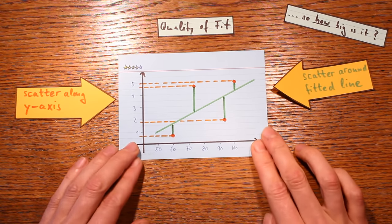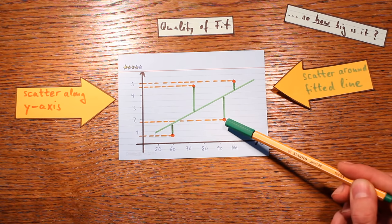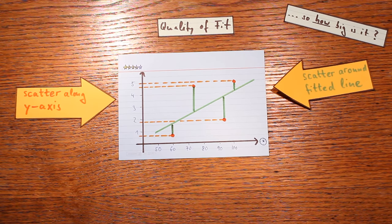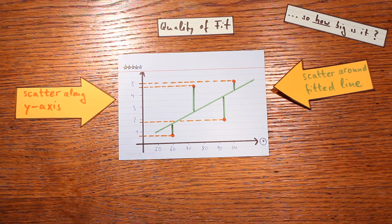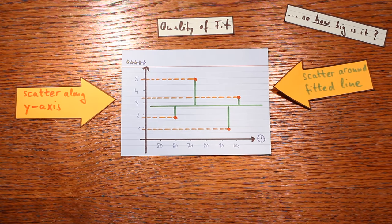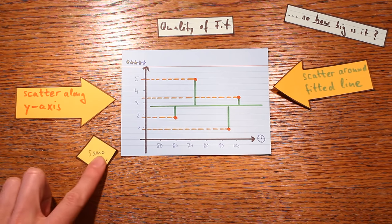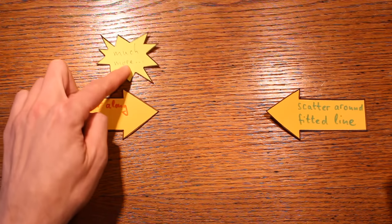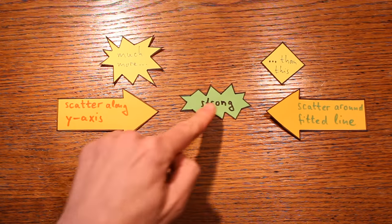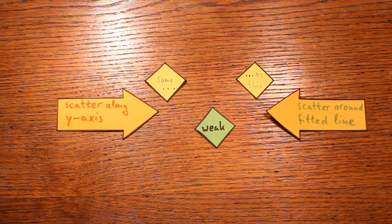In a second case, there's again quite some scatter along the y-axis, but the scatter around the fitted line is also really large — the points are far from the line. So there's only somewhat more y-axis scatter than scatter around the fitted line, giving a weaker correlation of 0.56. In a third case the fitted line is perfectly flat, so the scatter along the y-axis and the scatter around the fitted line are exactly equal, and the correlation coefficient is exactly zero.